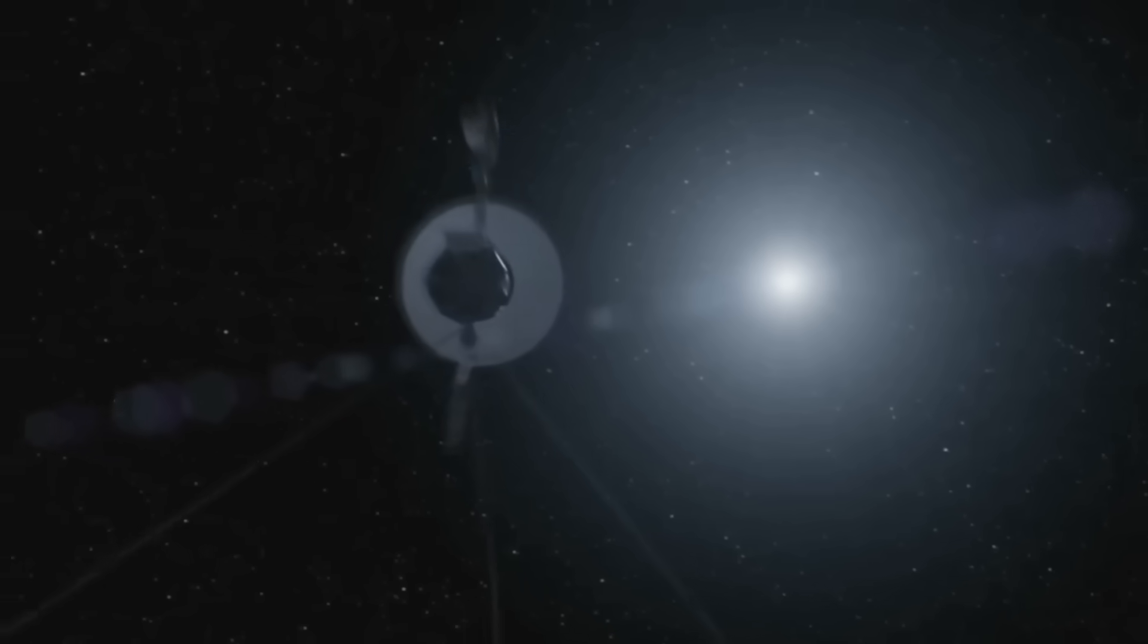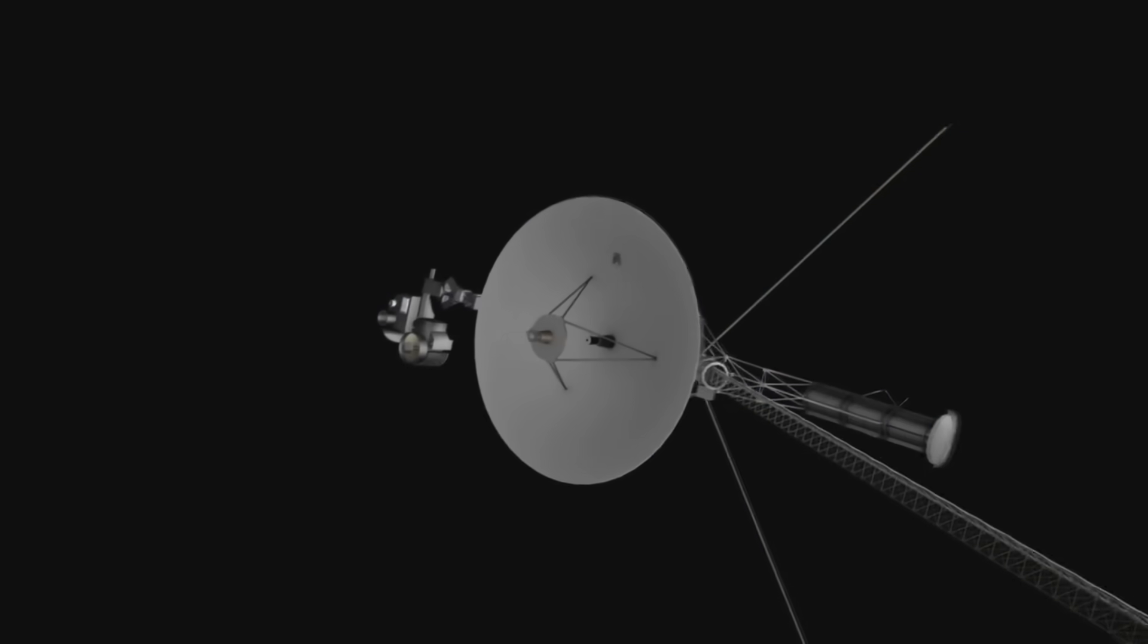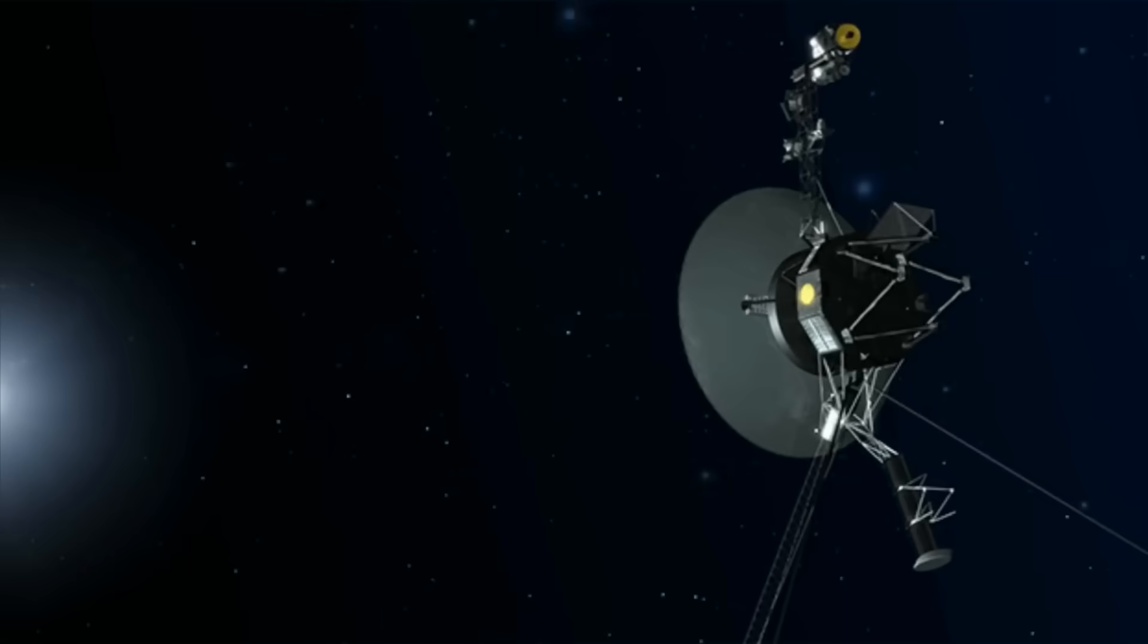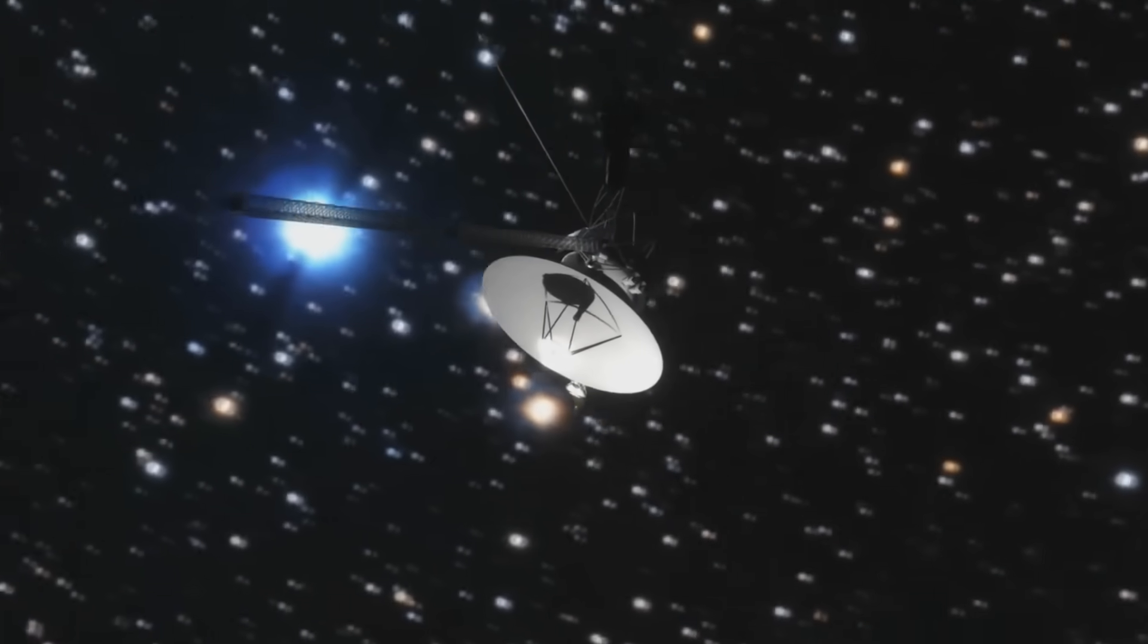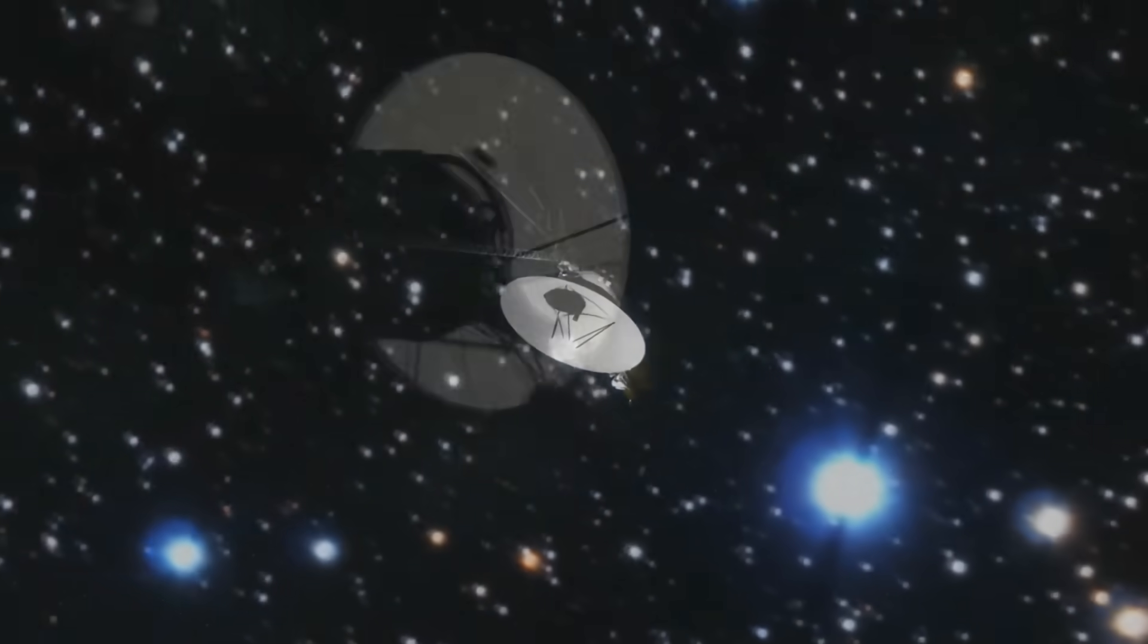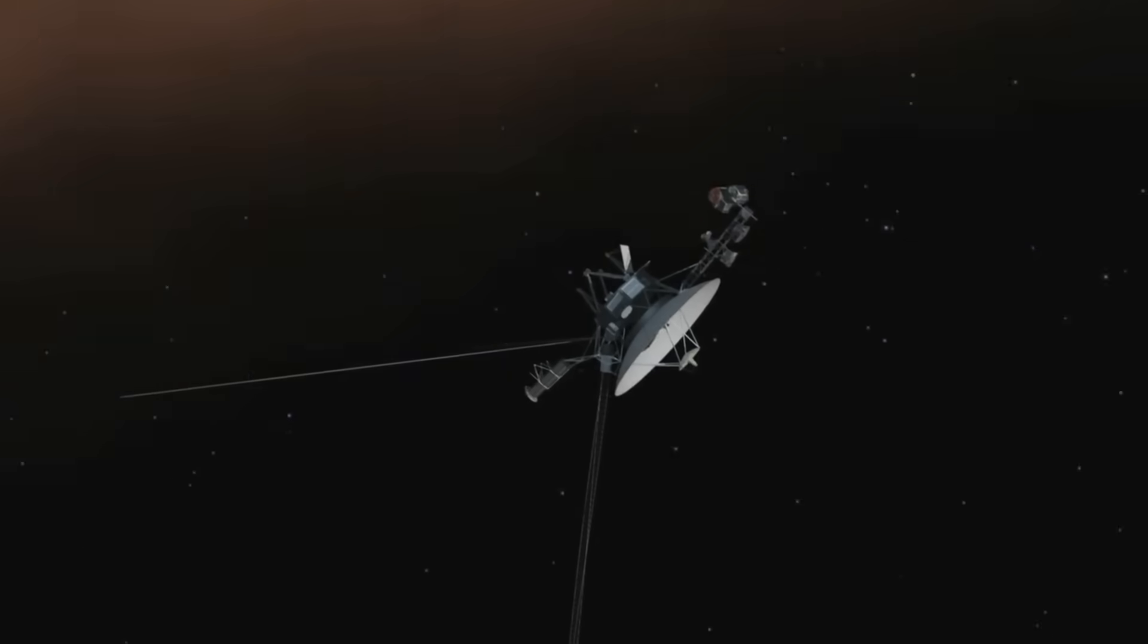Voyager 2 was never supposed to last this long. Designed for a five-year mission, it has survived 47 years in space. It battled radiation, dust, freezing temperatures, and the immense silence between planets. And yet, in 2023, it sent something back that has scientists more confused and afraid than ever before.